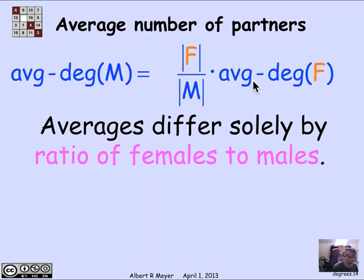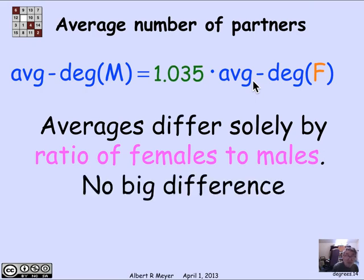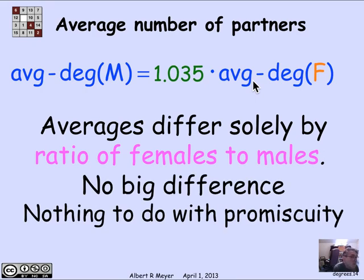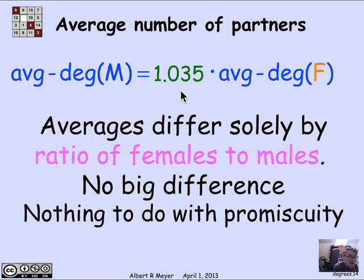Now what that tells us is that these wild figures of twice as many and 30% more and so on are completely absurd because we know a lot about the ratio of females to males in the population. As a matter of fact, in the US overall, there are slightly more women than men. There's 1.035 women for each man in the US population. And that tells us then that if you surveyed the population of all the men and women in the country, you would discover that the men had 3.5% more partners than women per man. But this has nothing to do with their behavior or promiscuity or lack of it. It's simply a reflection of the ratio of the populations.